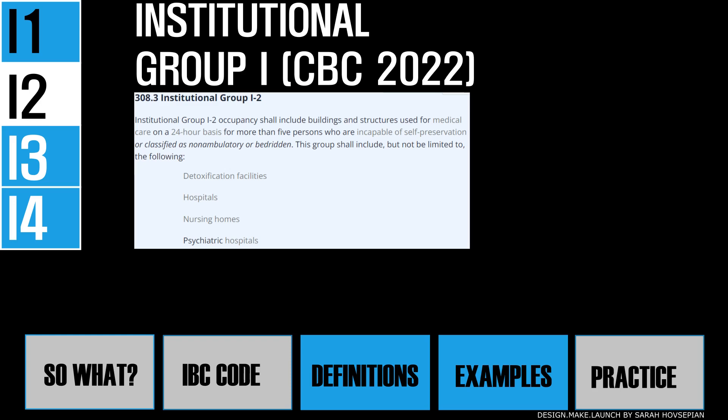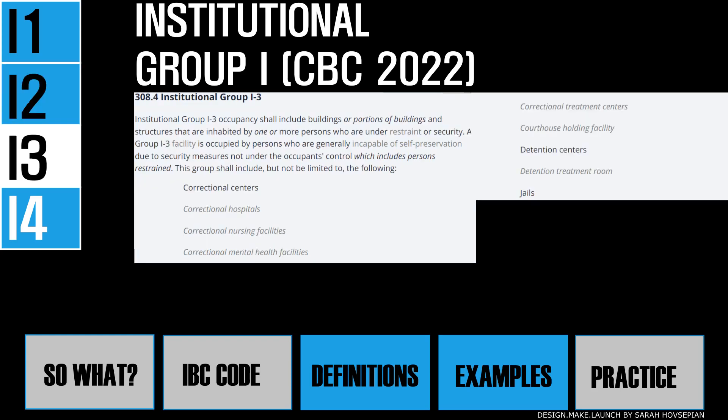Institutional group I3 has more than five people living under supervised conditions under restraint or security on a 24-hour basis. They cannot respond to emergencies without staff assistance due to the security measures — not necessarily for physical reasons, but because they are detained. This group includes prisons, detention centers, and more. This group is further subdivided into nine conditions in the CBC based on relative freedom of movement inside a facility.